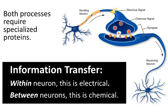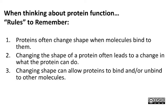In both cases — information transfer within neurons and between neurons — specialized proteins are involved. Here are some key rules to remember when considering how proteins work. Proteins often change shape when another molecule binds to them. When you have a shape change, that may lead to a change in what the protein is capable of. And a change in shape can also allow that protein to bind or unbind yet another molecule.